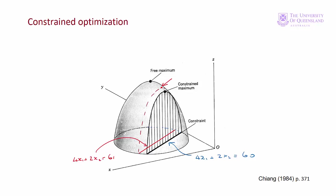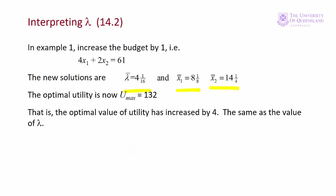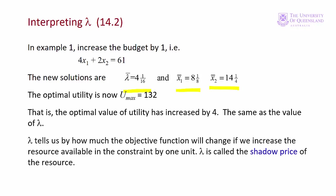If we compare those two maxima we see that the increase is equal to lambda. This isn't a coincidence — this is what lambda tells us. It tells us by how much the objective function will change if we increase the resource available in the constraint by one unit.